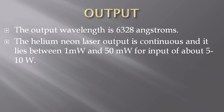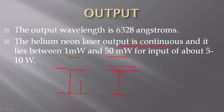The output wavelength is 6328 Å. The Helium-Neon laser output is continuous and lies between 1 milliwatt and 50 milliwatts for an input of about 5 to 10 watts. The major advantage is that the output is continuous, because Helium de-excites from F2 to F1 or F3 to F1 when it transfers its energy to Neon, which is excited from E1 to E4 or E1 to E6. Meanwhile, Helium atoms are being re-excited, so they are ready again to excite Neon atoms, and the process continues.